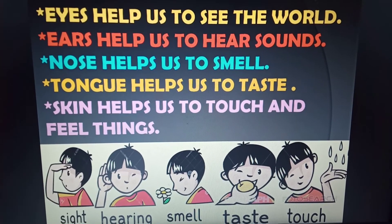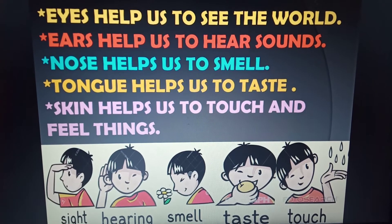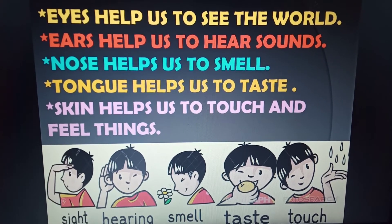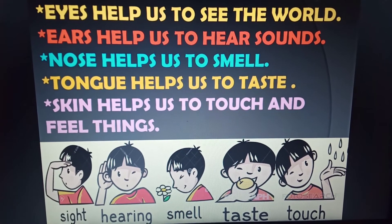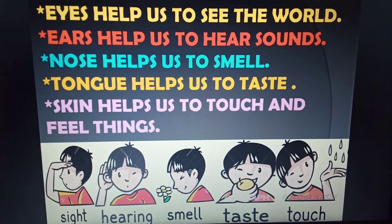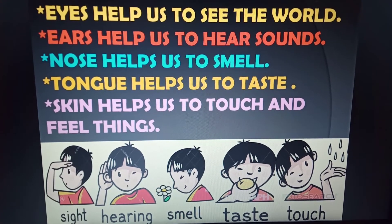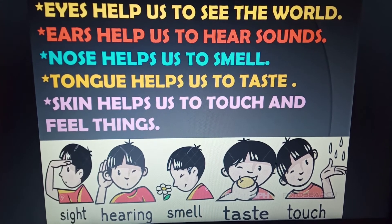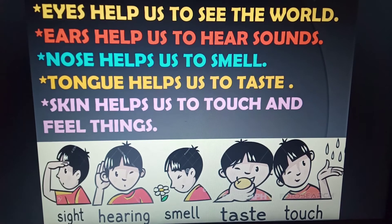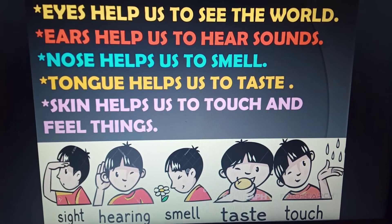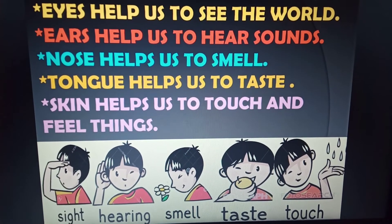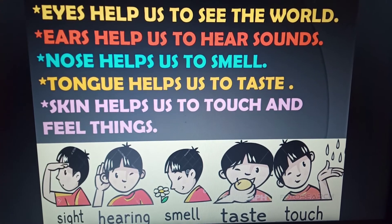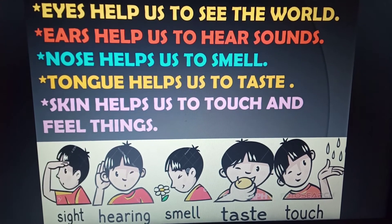Tongue helps us to taste. Here in the fourth picture we can see the child tasting with the help of the tongue. Skin helps us to touch and feel things. In the fifth picture we can see that the child is feeling the raindrops.